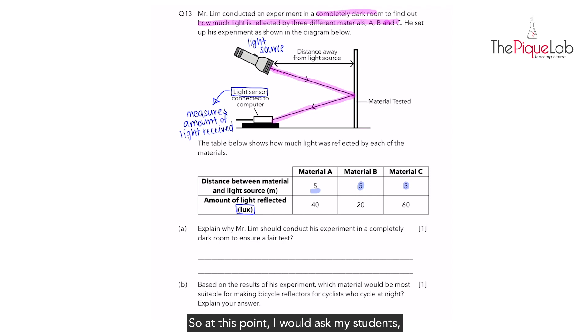At this point I would ask my students, are you able to tell which material reflects the most amount of light? We compare 40 units for A, 20 units for B, 60 units for C. You know that C is the one that reflects the most light. Since C reflects the most light, that means that C is the most reflective material.